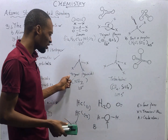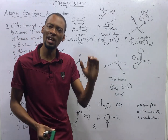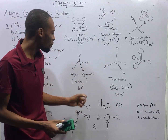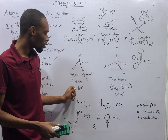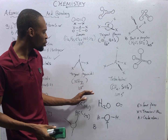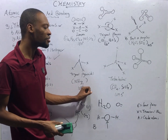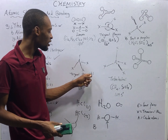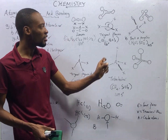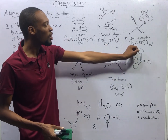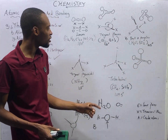Trigonal pyramidal: a major example of a trigonal pyramidal molecule is ammonia, NH3. The bond angle in ammonia is 107 degrees, and ammonia has one lone pair. Water and SO2 have two lone pairs, while linear molecules have no lone pairs.